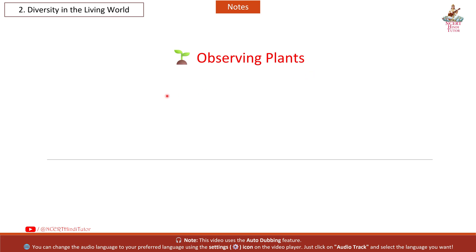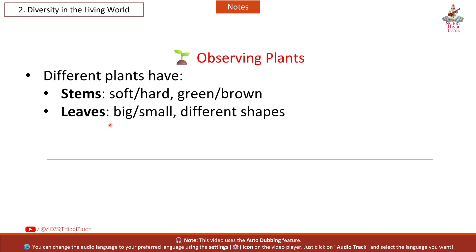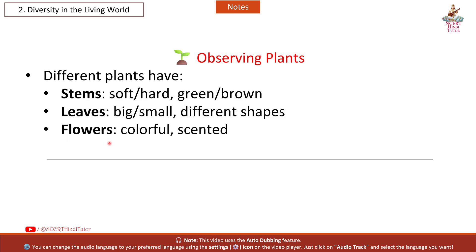Observing Plants: Different plants have different stems — soft, hard, green, or brown. Leaves can be big or small with different shapes. Flowers are colorful and scented.